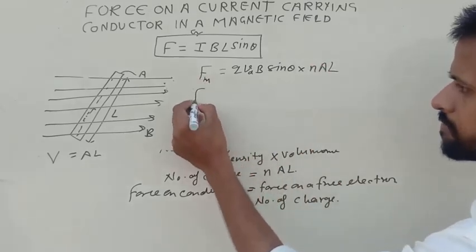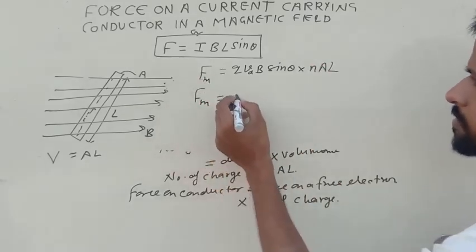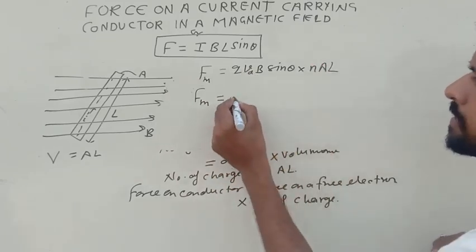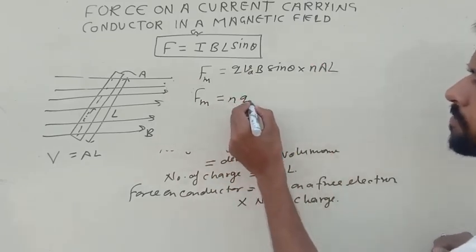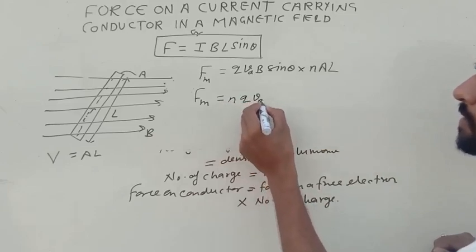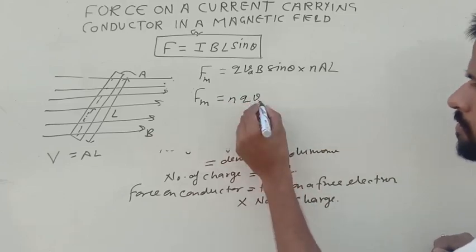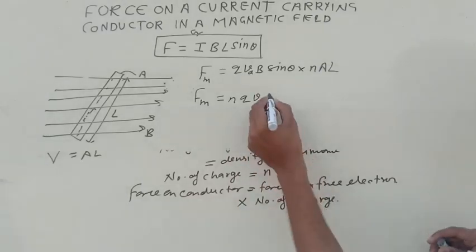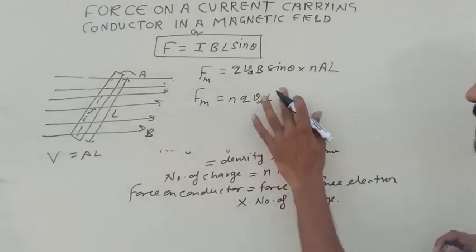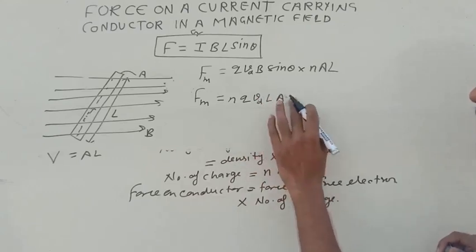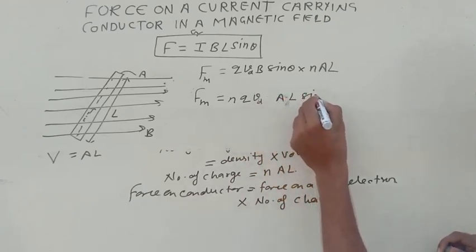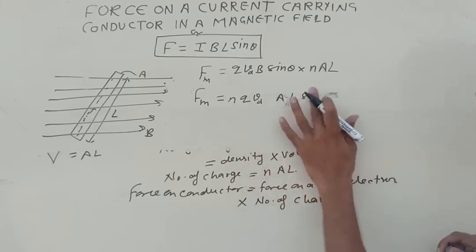This is the magnetic force. So this is N, Q, VD, L, A times B sin theta.